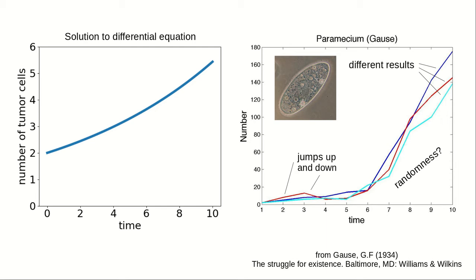Another difference from our differential equation solution is that the data has only integer numbers of cells. Since the deterministic model was continuous, we have to allow 3.7 cells as the population size is increasing. To better model tumor cell growth when we have a small number of cells, we will develop a stochastic model — i.e., a model where the growth occurs via a random process.